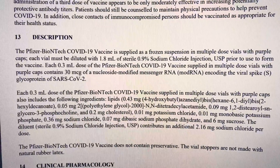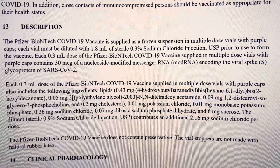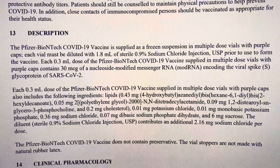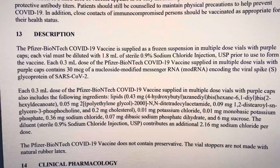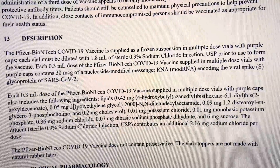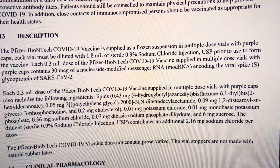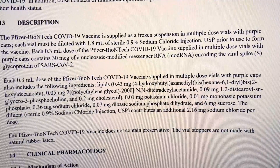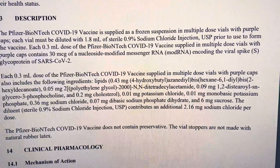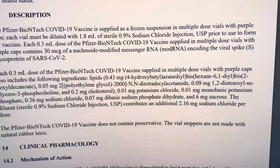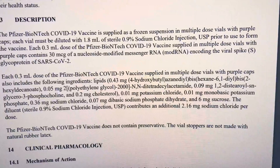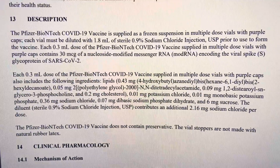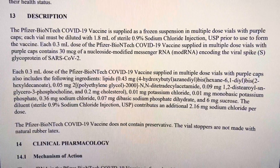It's a glycoprotein. Also, it's a purple cap vial — should you shake it? No. Good. It contains lipids: by weight, 0.43 milligrams of 4-hydroxybutyl azine dial bishexane 6-1 — that's a long name for a lipid — decanoate.